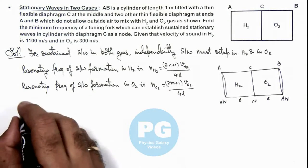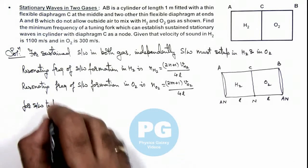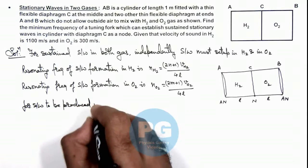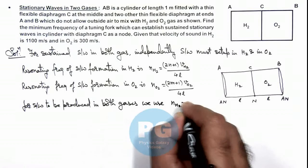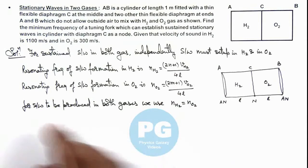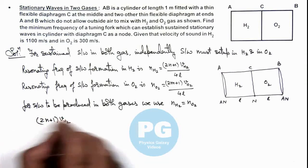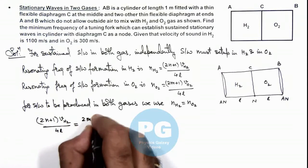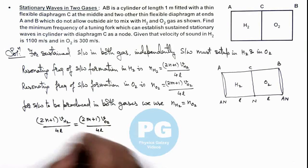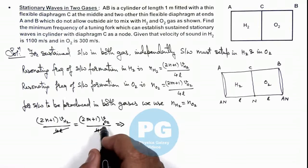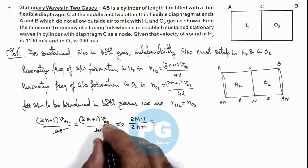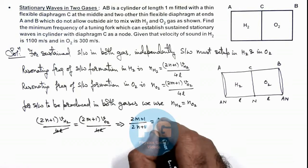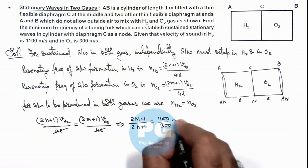For stationary waves to be produced in both gases, the frequency of hydrogen must be equal to the frequency of oxygen. So if we equate the two: (2n+1) × velocity of hydrogen / 4L = (2m+1) × velocity of oxygen / 4L. This gives (2m+1) / (2n+1) = velocity of hydrogen / velocity of oxygen = 1100 / 300 = 11/3.